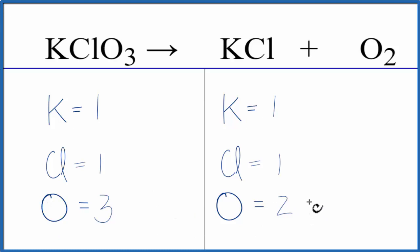Whenever I have an odd number of oxygen atoms, I like to get that to an even number, and that makes the balancing a lot easier. So let's put a coefficient of two in front of the KClO3.